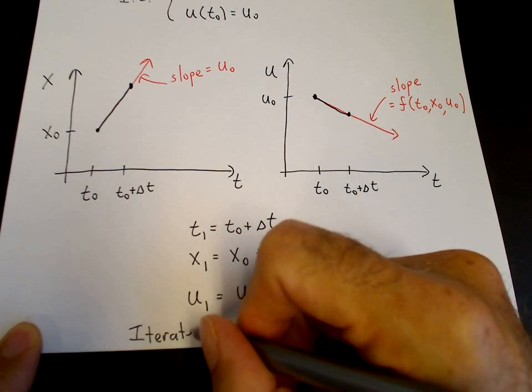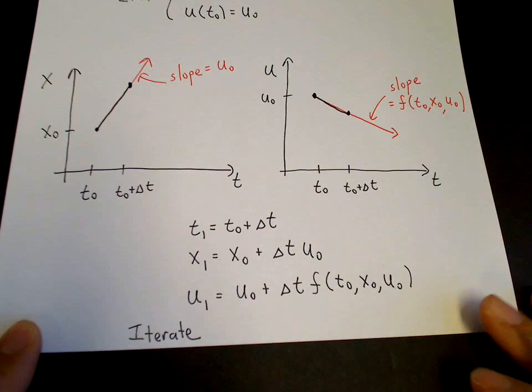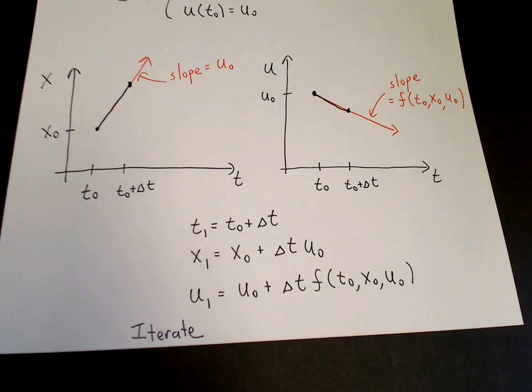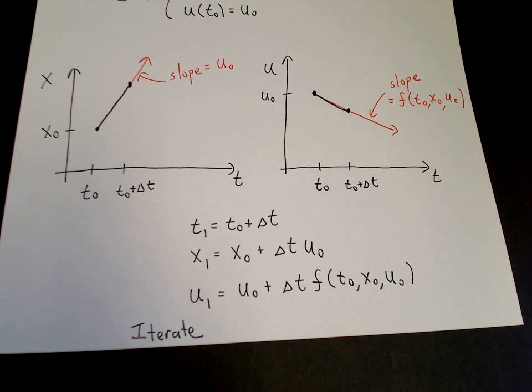So once we find t1, x1, and u1, then we use those on the right hand side to find t2, x2, and u2.